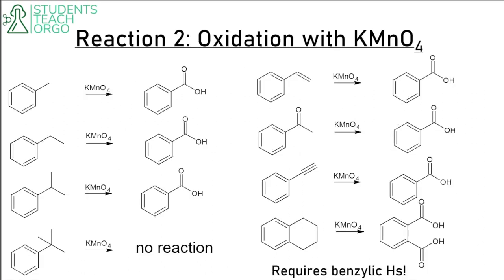Now let's talk about reaction two, using KMnO4 for oxidation. You need a benzylic hydrogen in order to oxidize with KMnO4. Primary, secondary, and tertiary benzylic carbons will all be oxidized — except quaternary benzylic carbons. Even allylic positions will be oxidized. If you already have a ketone, it will be oxidized to carboxylic acid. An alkenyl group will be oxidized, and even a double-ring system will be oxidized to create a dicarboxylic acid benzene.